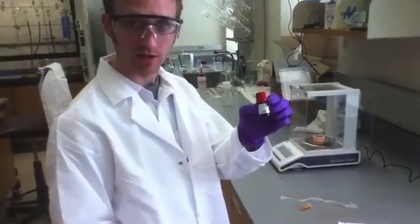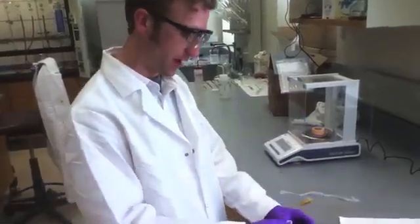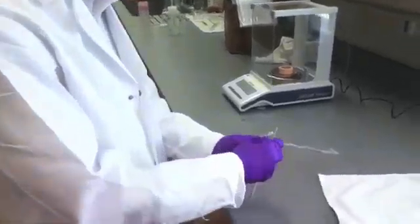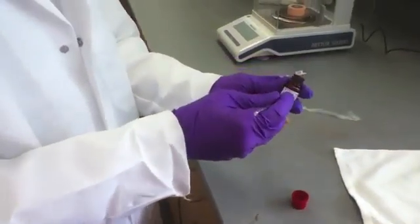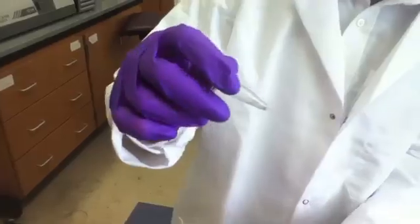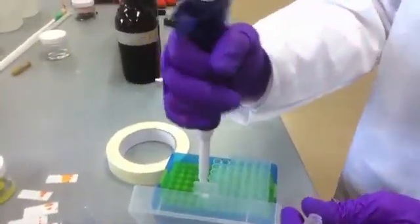This is rhodamine 110. This is the product formed after one of our probes reacts with H2S. We can synthesize the probe from this. This is in solid form, it's a chemical. I'm going to dissolve it in some methanol and put it in solution so we can see the fluorescence.